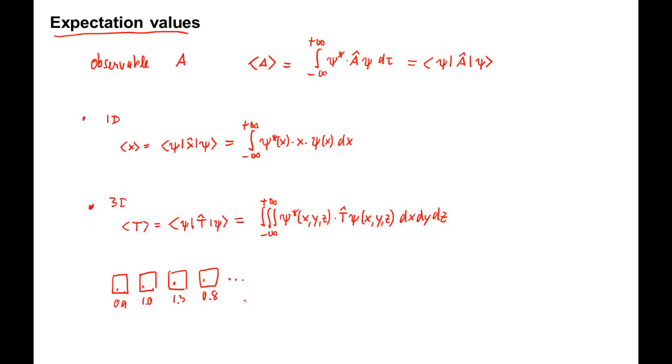This scatter is present even if you make an effort to eliminate all experimental error and measure the position with infinite precision. Let's plot the results. The obtained positions on the horizontal axis and the number of times these values have been obtained on the vertical axis. You will get the distribution.